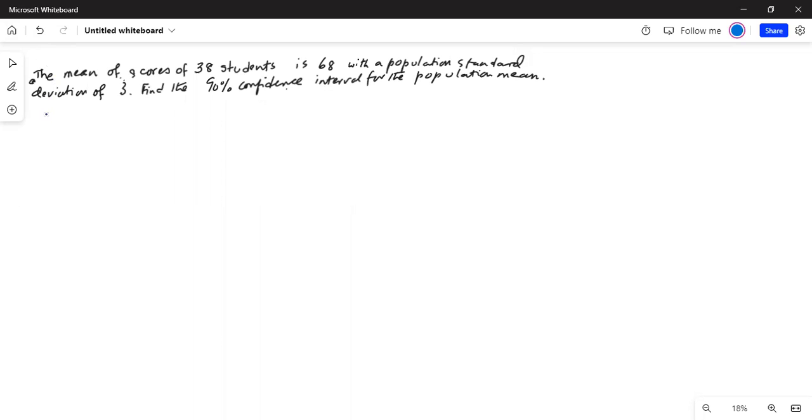Solution. Confidence interval for the population mean is given by x bar plus minus z alpha by 2 multiplied by sigma divided by square root of n.